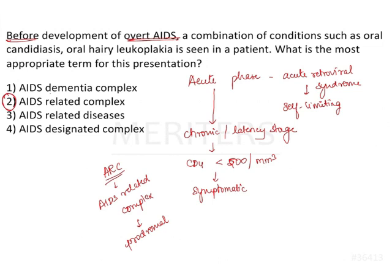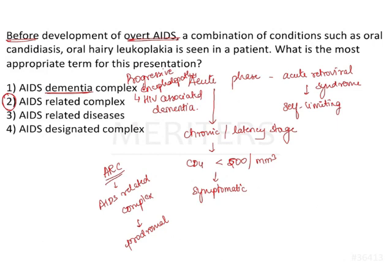Looking at the other options: AIDS dementia complex is a term associated with AIDS because the HIV virus enters the CNS, manifesting as progressive encephalopathy. The patient develops encephalitis, loss of memory, lack of concentration, and lack of interest. This neurological dysfunction seen in HIV patients is termed AIDS dementia complex, also known as HIV associated dementia.